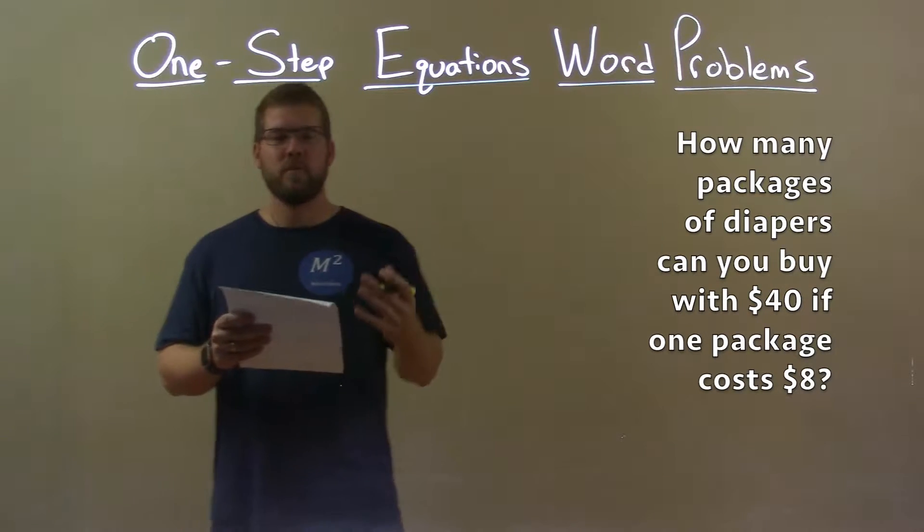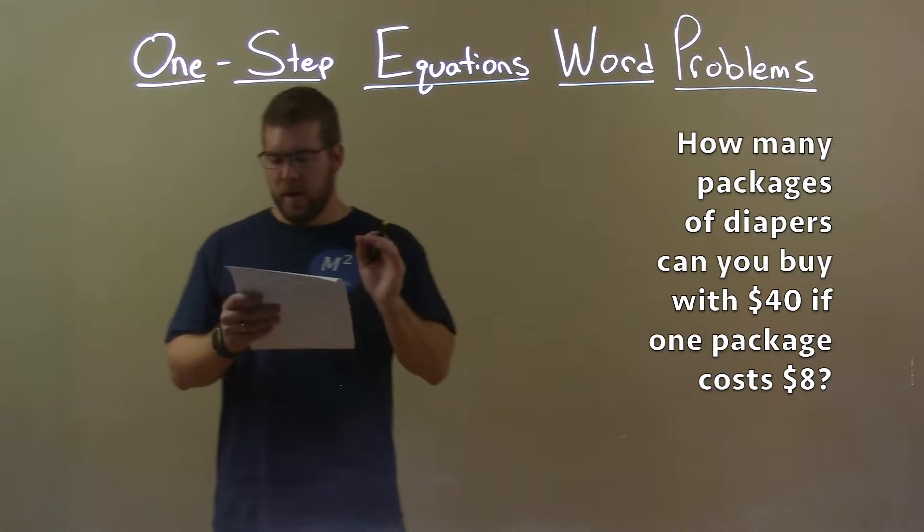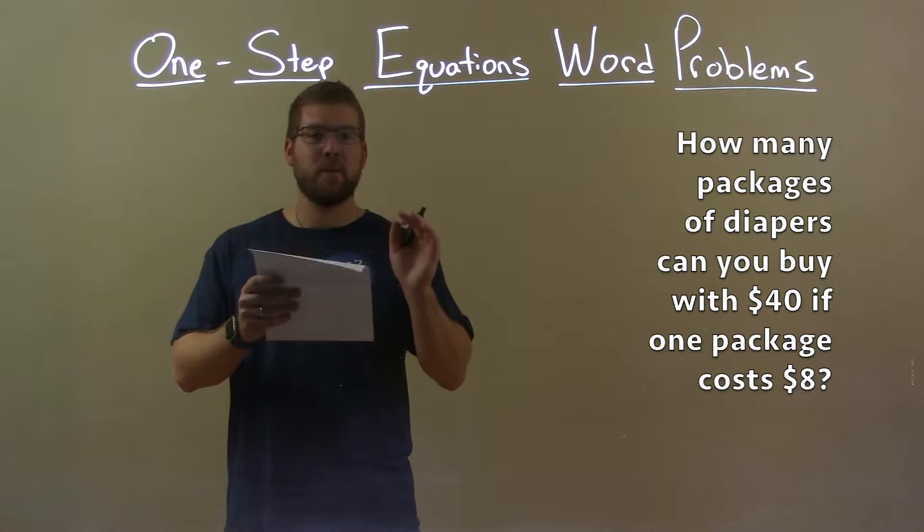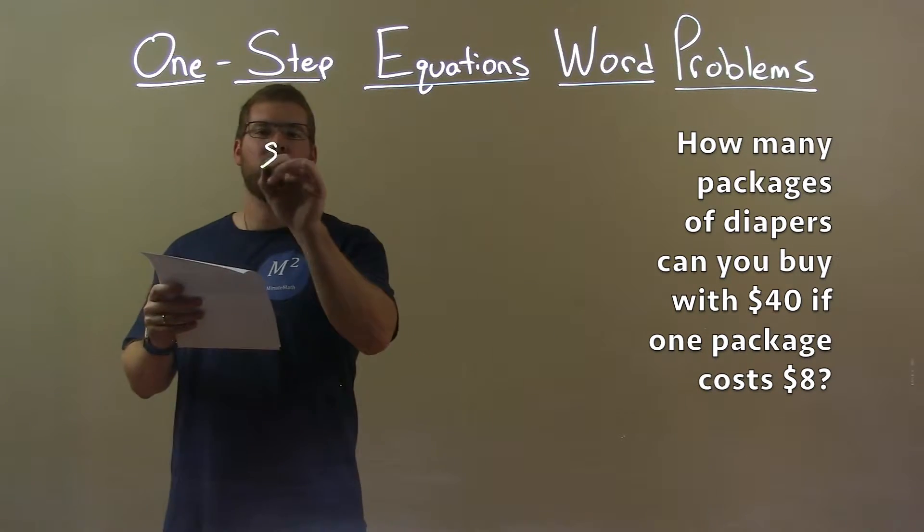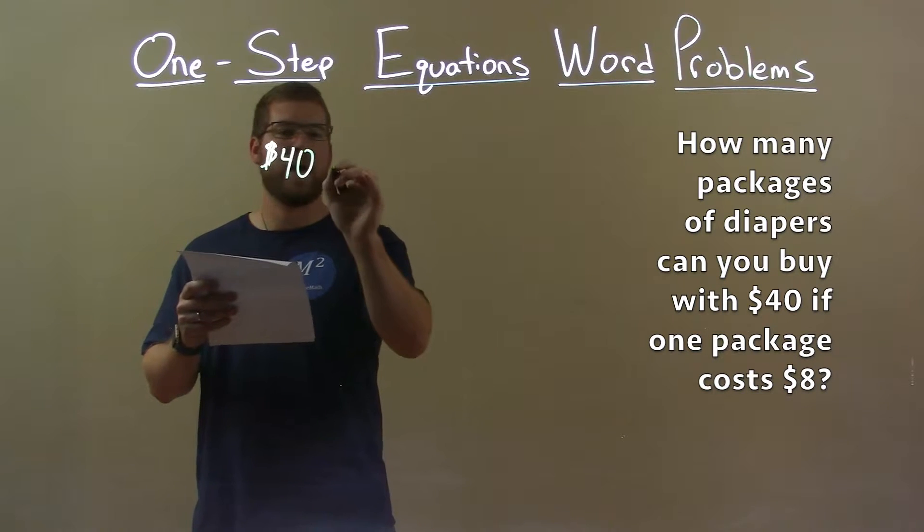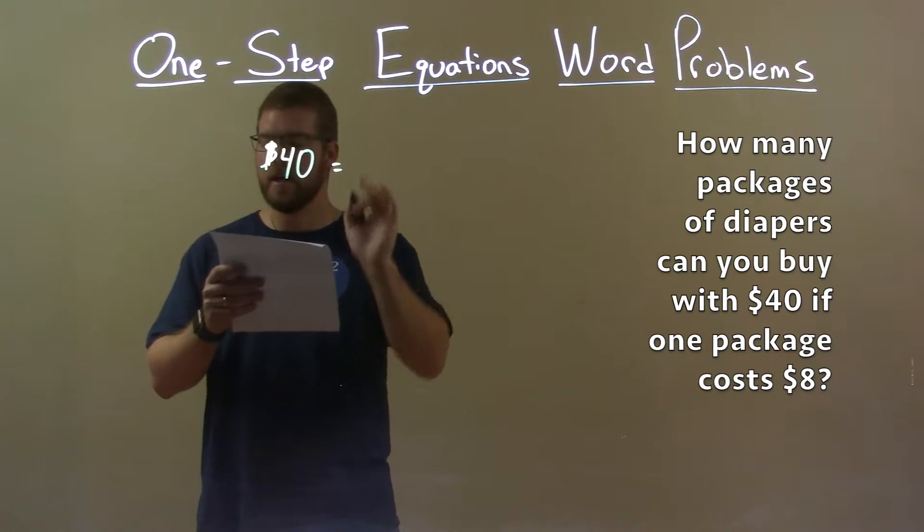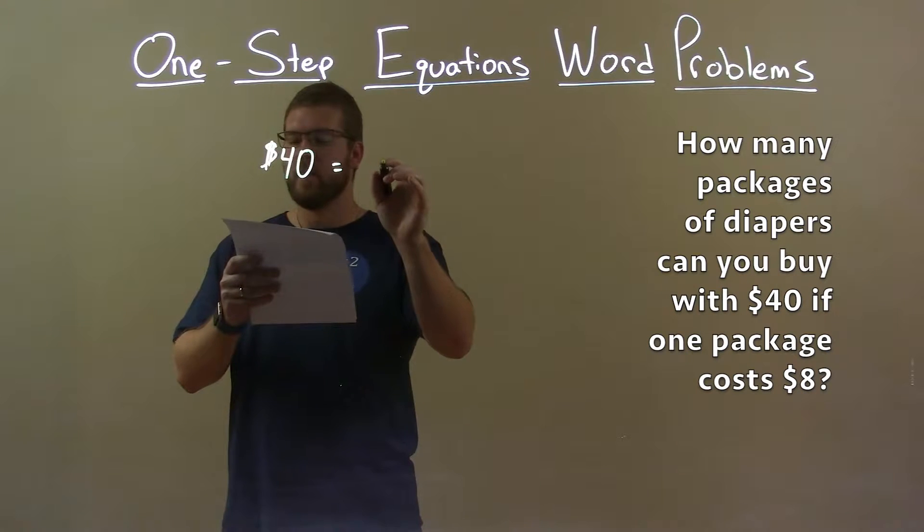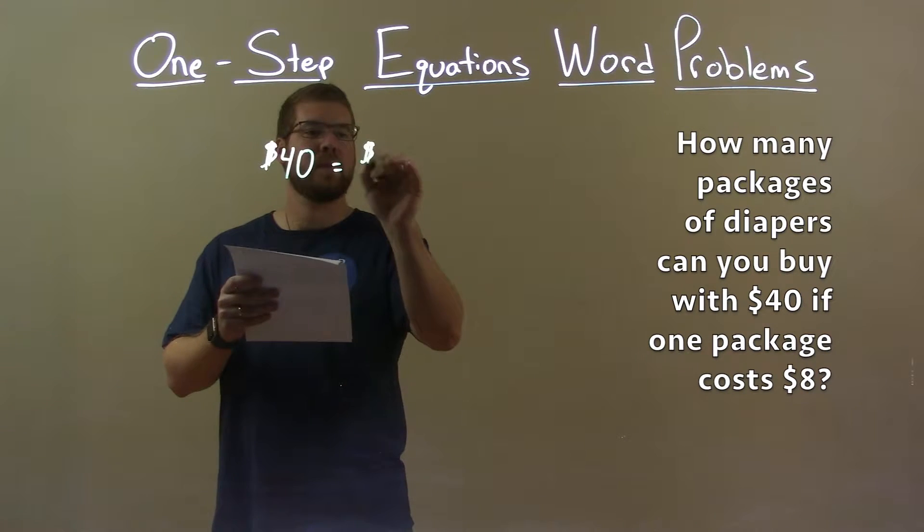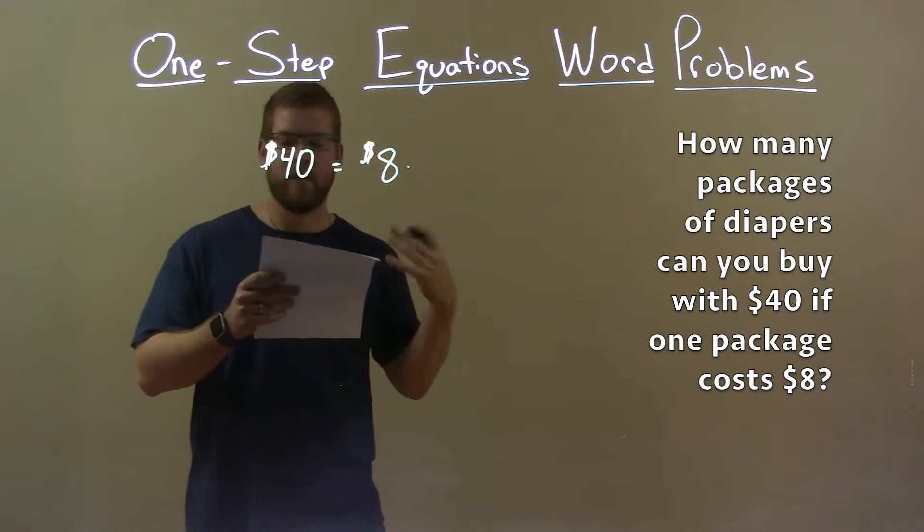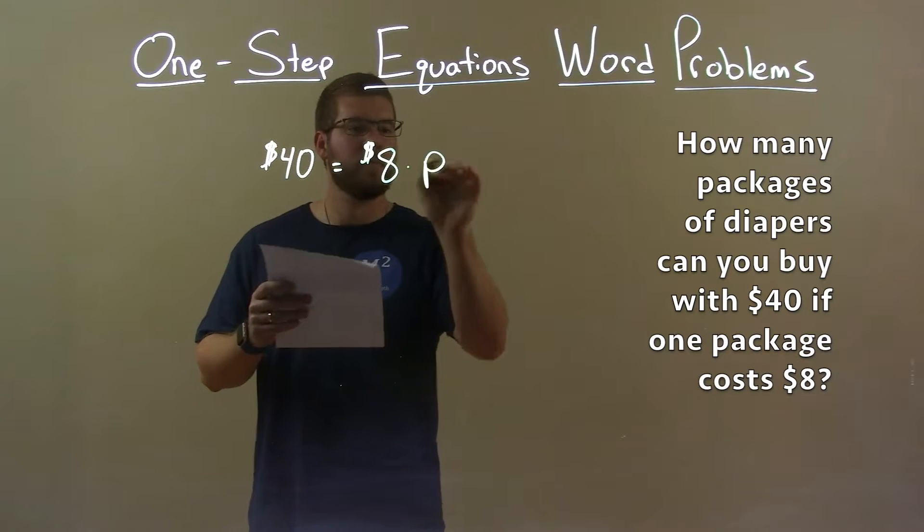With that information, we want to come up with an equation. They tell us how many packages can we buy with $40. So $40 is going to equal the cost of each package, $8, multiplied by the number of packages, P.